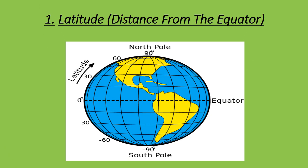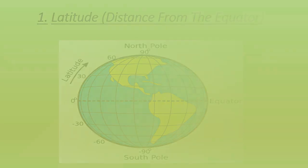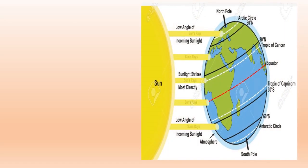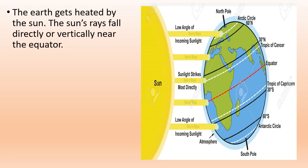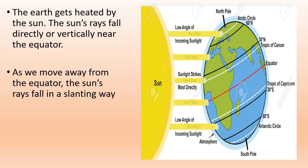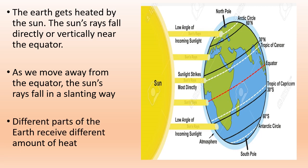Latitude, or distance from the equator. The Earth gets heated by the sun. The sun's rays fall directly or vertically near the equator. As we move away from the equator, the sun's rays fall in a slanting way. Different parts of the Earth receive different amounts of heat.